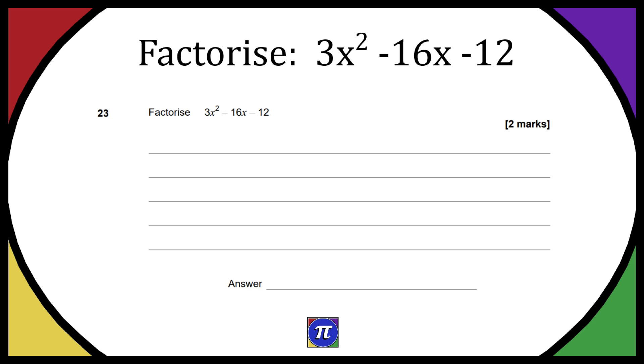The first thing you can do, which is applicable to all factorization questions by hand, is to work out which pairs of numbers multiply to make that last number. You don't need to take into account whether it's minus or plus yet, just which pairs multiply to make 12. For example, we have 1×12, 2×6, and 3×4. Those are all the pairs.